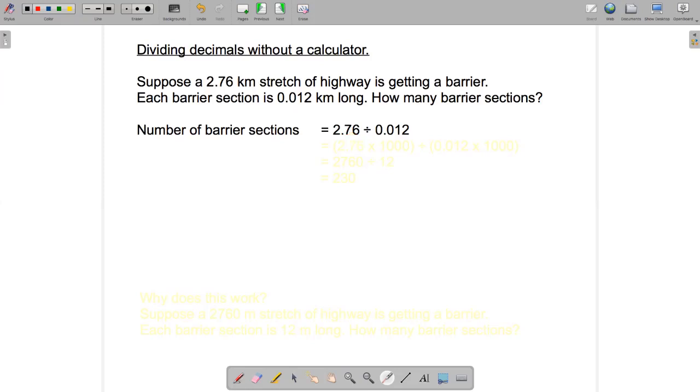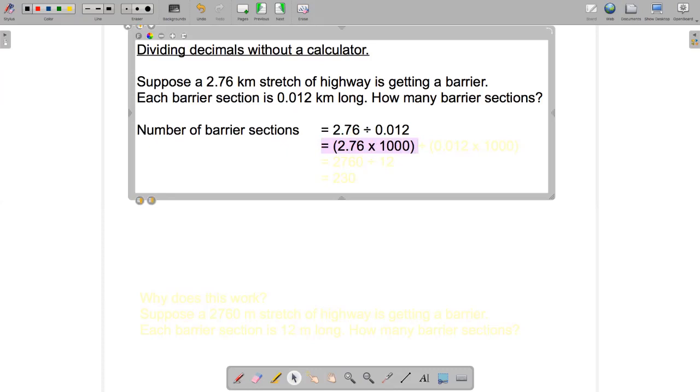What does it mean to multiply a number by 10 three times? Well, that's the same as multiplying by 1,000. Okay, so let's do that.